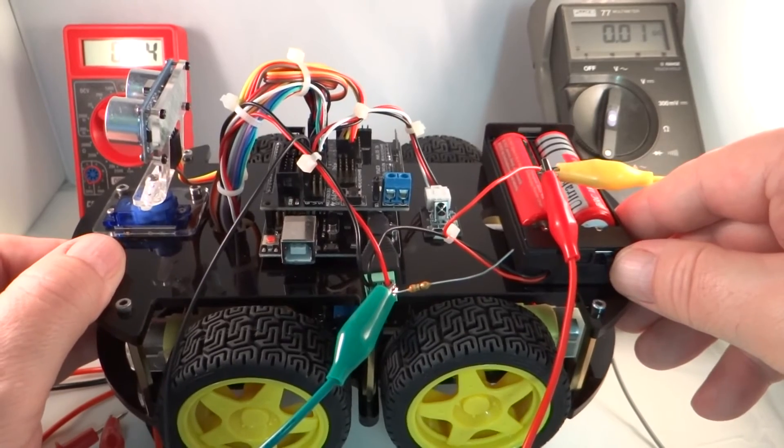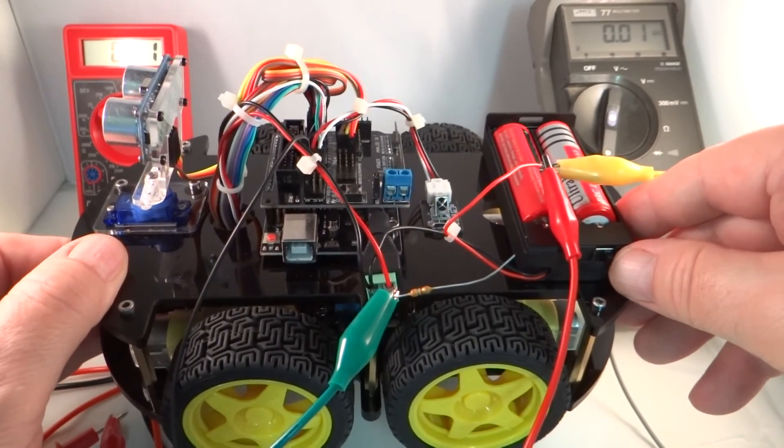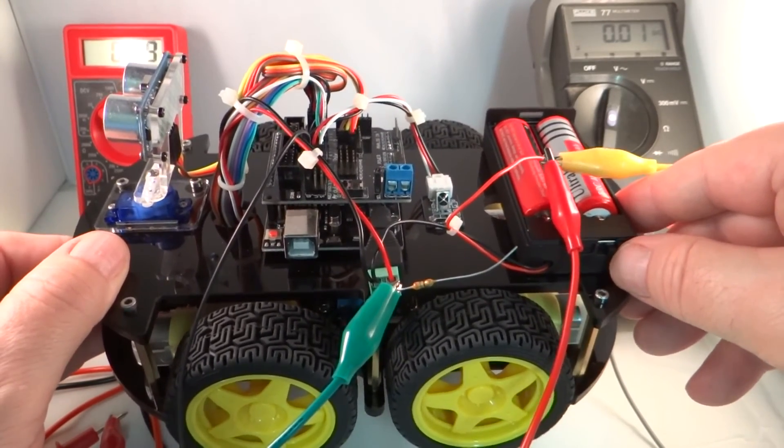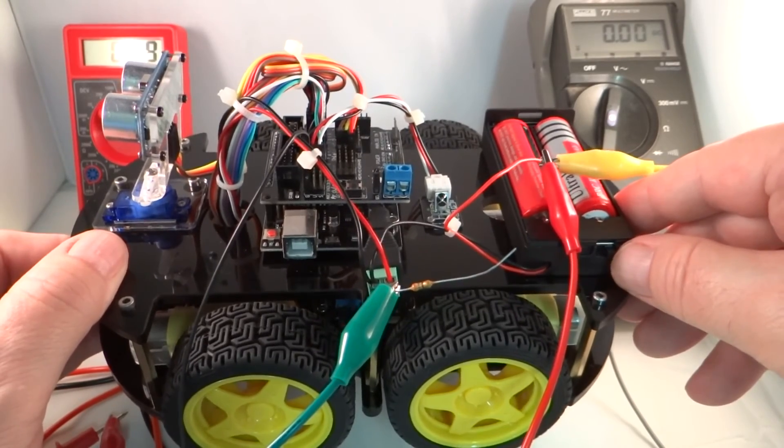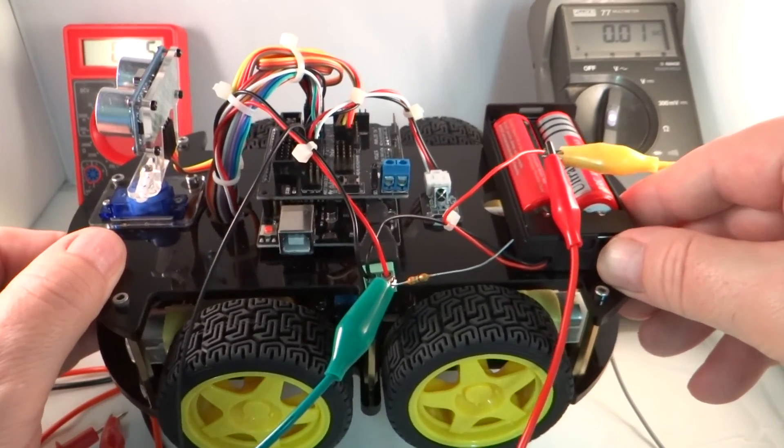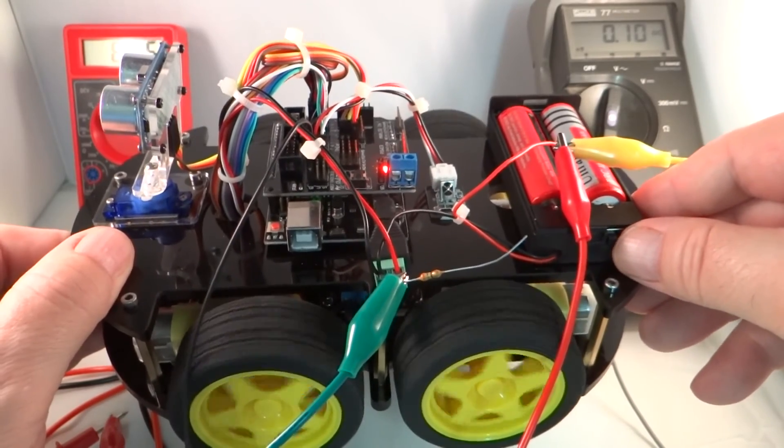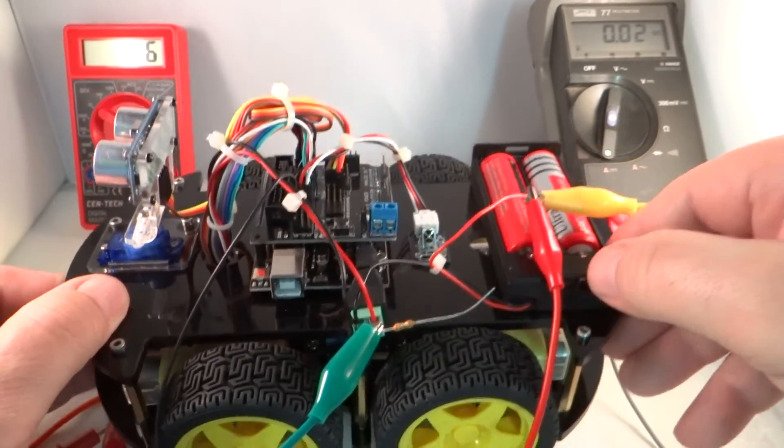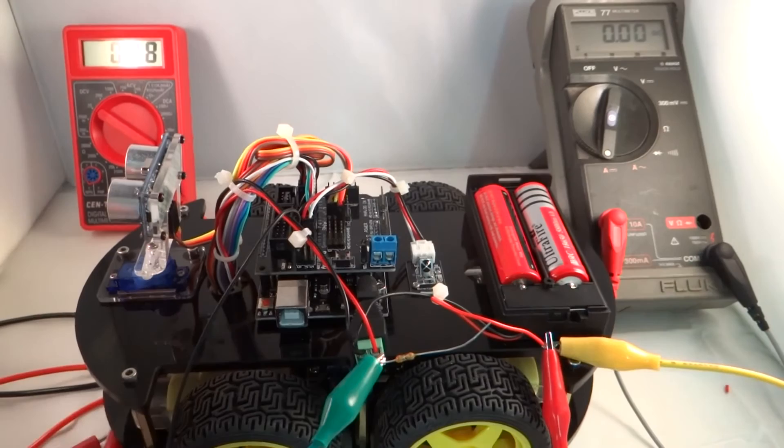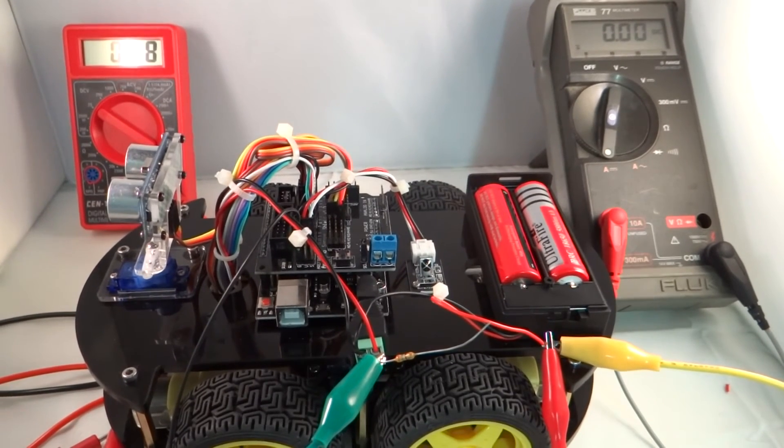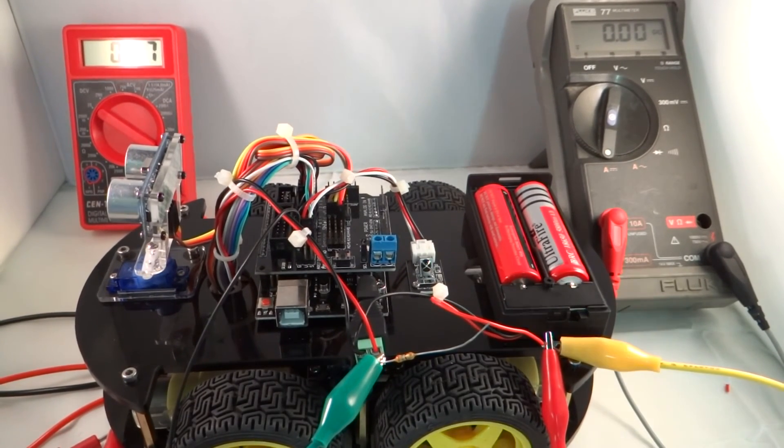Now initially the car doesn't start out running so let's see what the voltage is without the motor load and just the Arduino coming up. 8.3. So about 8.28 volts with just the Arduino.